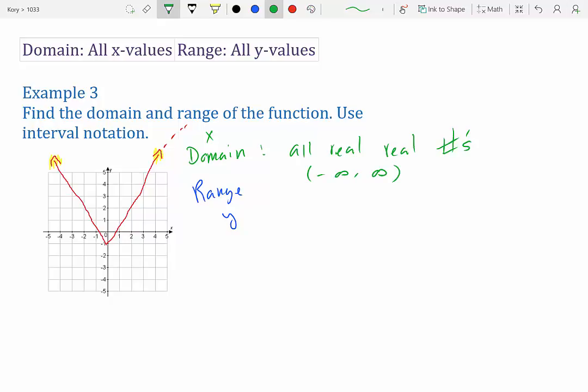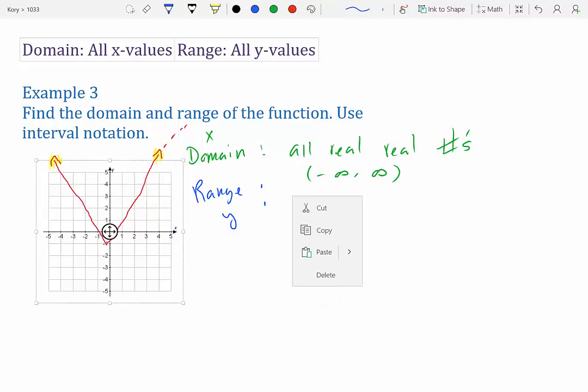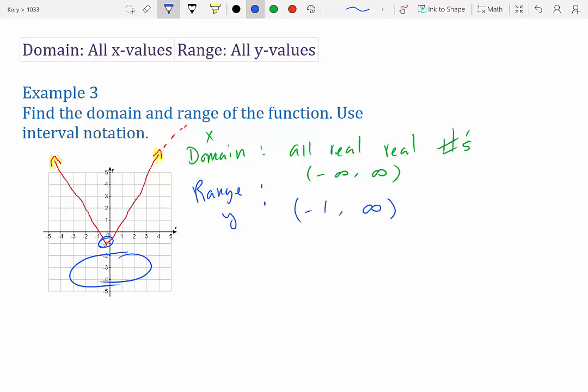The range, now where does y start and stop? So here, if you notice, down here, there's no y's. y starts at -1, and it goes infinitely. If you see how these lines keep going, they're going to keep going on forever and ever and ever. So that means it's -1 to positive infinity.